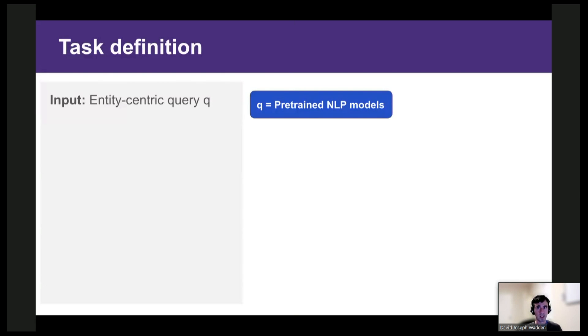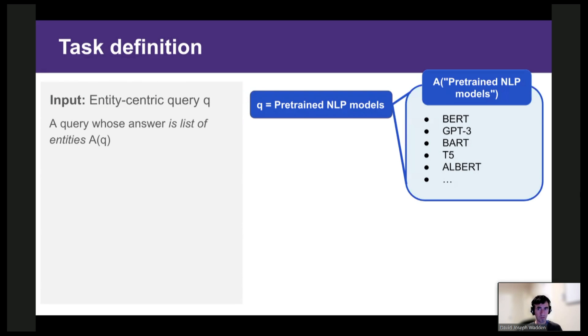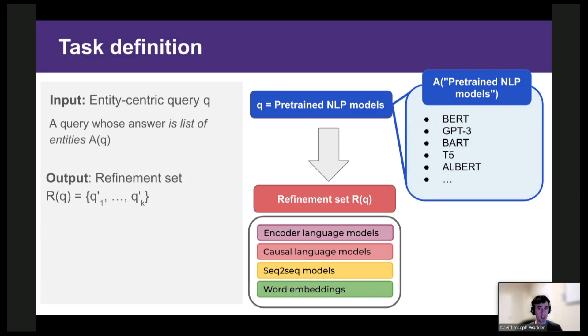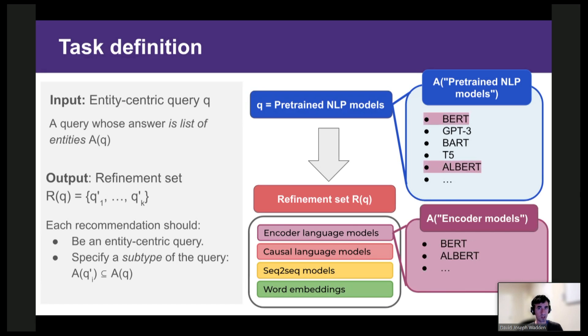The task input is an entity-centric query, which is a query whose answer is a list of entities. So here we're showing the query together with its answers. The task output is a refinement set, which consists of k query refinements. So we'll use k equals four. And we're going to require that each refinement should itself be an entity-centric query specifying a subtype of the input query. So for example, the answers to the refinement encoder models are included among the answers to the input query.